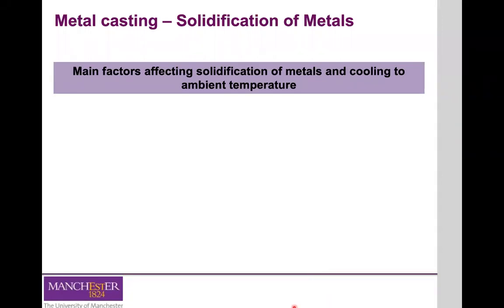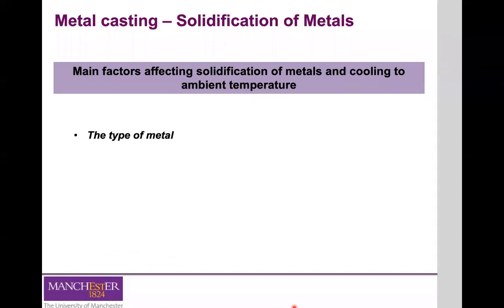After the molten metal is poured into the molds, there are a series of events that take place during solidification and cooling down to ambient temperature. These events can greatly influence not just the size, shape, and uniformity of the parts and the structure of your material, but also the chemical composition of the grains formed throughout the casting, which will influence the overall properties of the metals. There are several factors that affect the solidification process.